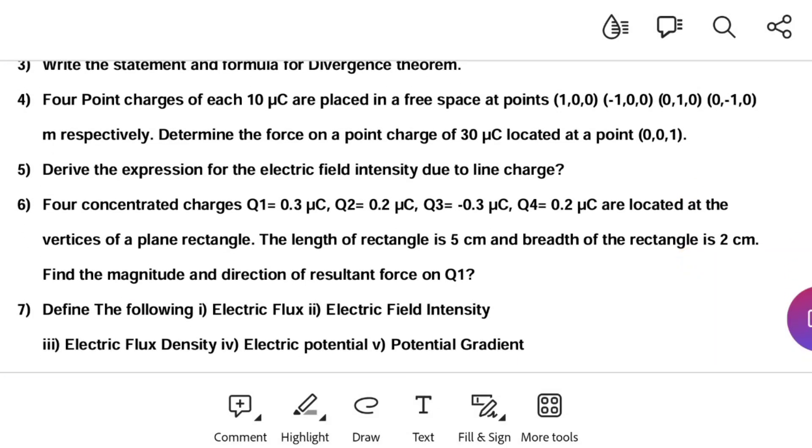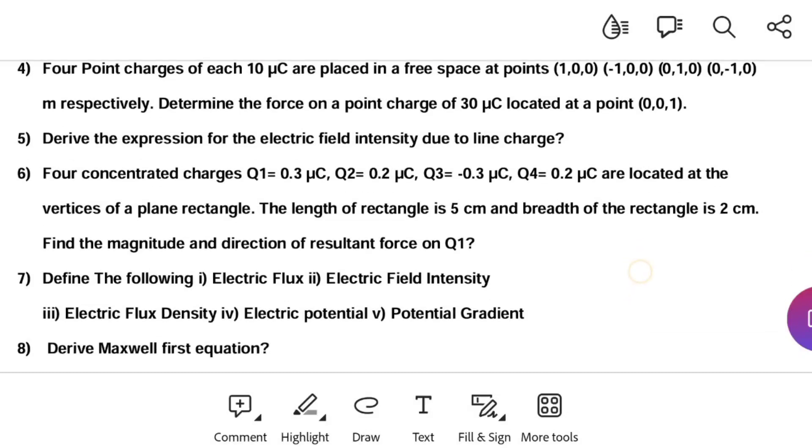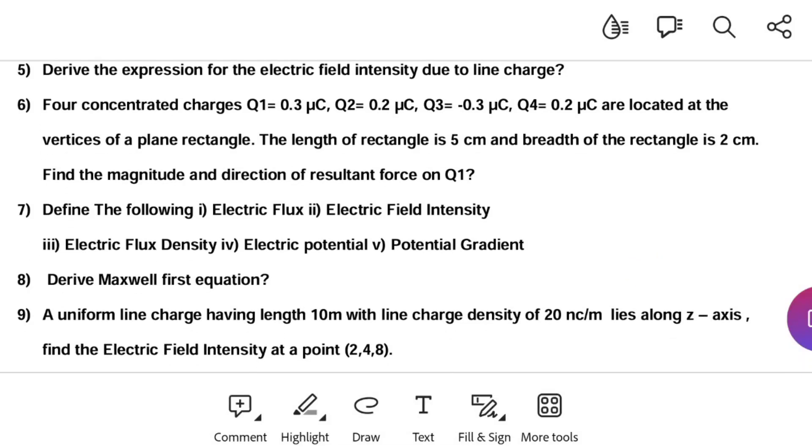Another question is four concentrated charges Q1=0.3 μC, Q2=0.2 μC, Q3=-0.3 μC, Q4=0.2 μC are located at the vertices of a plane rectangle. The length of rectangle is 5 cm and breadth is 2 cm. Find the magnitude and direction of resultant force on Q1. Define the terms electric flux, electric field intensity, electric flux density, electric potential, potential gradient. Among these definitions you have to represent with a diagram.